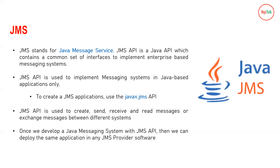To create a JMS application, you use the javax.jms API — a set of inbuilt libraries you can implement in your programs. Once you develop your Java messaging system with the JMS API, you can deploy the application in any JMS provider software. Just as you use a JVM to compile and run a Java program, in the enterprise world you deploy your JMS application code onto a server so it is accessible from the outside world.